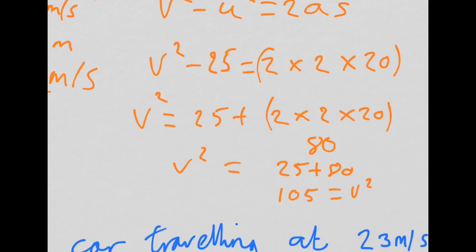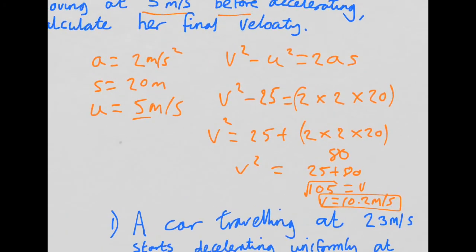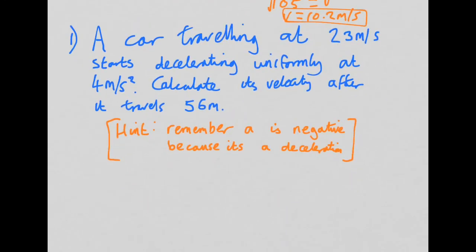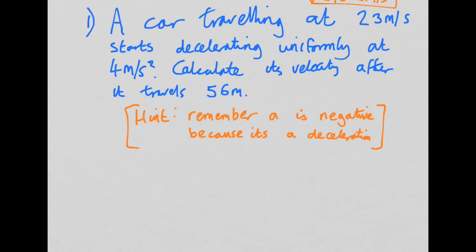Which on a calculator is, bear with me here, 10.2. So V is equal to 10.2 meters per second. That's our answer. Have a look at this question here. This is one for you to do. So car traveling at 23 meters per second starts decelerating uniformly, decelerating, at 4 meters per second squared. Calculate the velocity after it travels 56 meters.